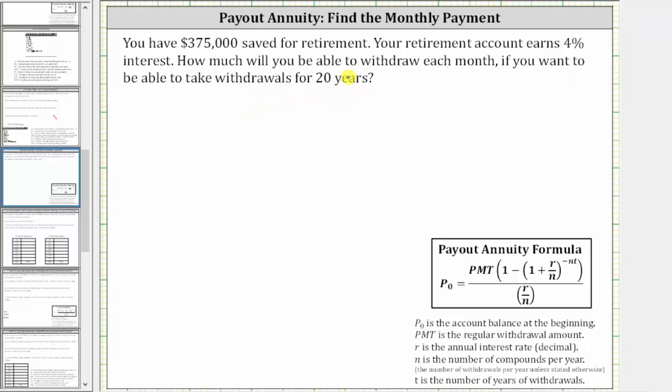We will answer this question using the payout annuity formula shown below, where P₀ is the account balance at the beginning, PMT is the regular withdrawal amount, R is the annual interest rate as a decimal, N is the number of compounds per year, which will be the number of withdrawals per year unless given otherwise, and T is the number of years of withdrawals.